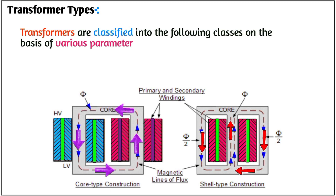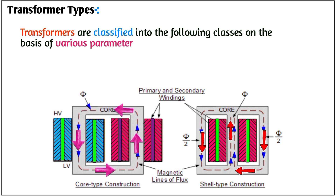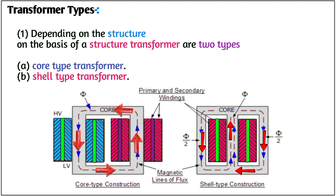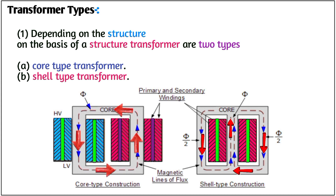Transformers are classified into the following classes on the basis of various parameters. Number 1: Depending on the structure. On the basis of structure, transformers are two types: core type transformer and shell type transformer.